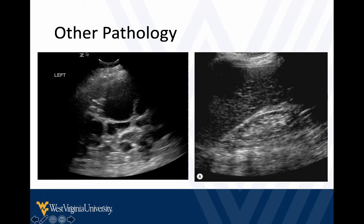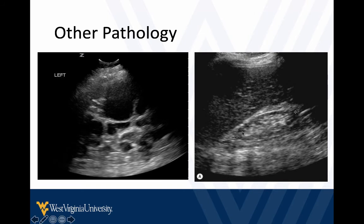You may see polycystic kidney disease — there are occasions where you may be the first person to diagnose that in the patient. You'll see the whole kidney obliterated with multiple cysts everywhere. Sometimes it can be hard to tell if there's obstruction because this obscures the anatomy. You may also see renal atrophy. In patients with long-standing kidney disease, you may have a really hard time finding their kidneys. Here's an example where the kidney is small and the cortex is very thin — this is an atrophied kidney.